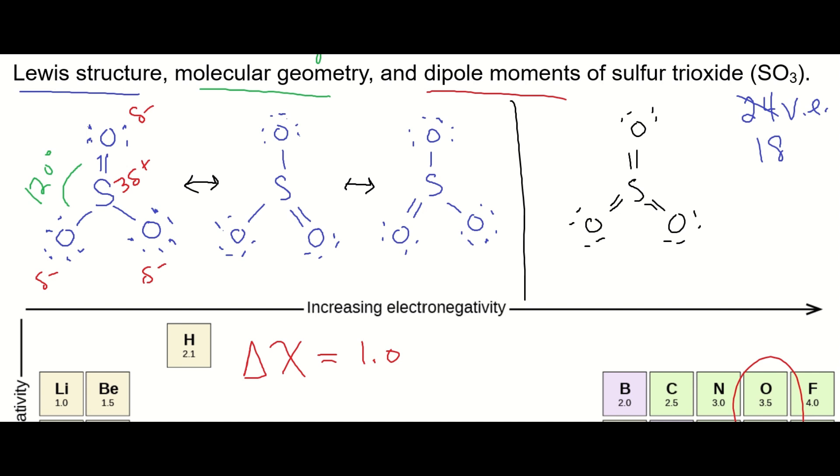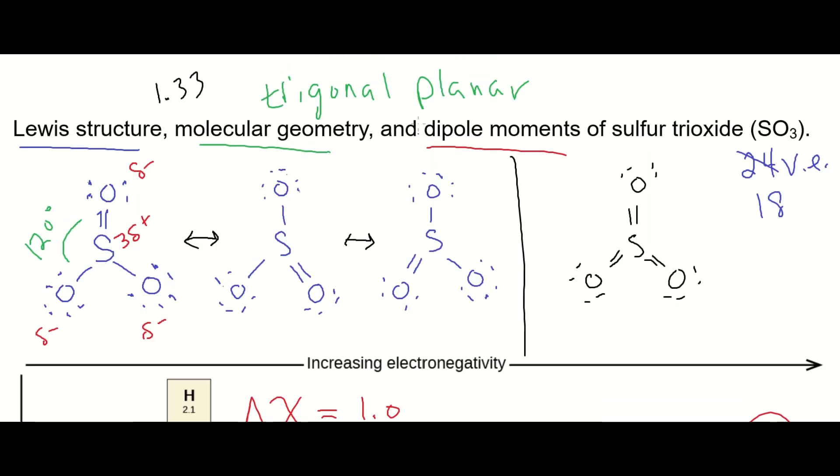Now, even though you have these polar bonds, because the molecule is symmetrical, then that means the molecule has no dipole moment. Because they're all pulling in their own directions, but those cancel out. So the answer to the last part is no dipole. In other words, the molecule is non-polar.